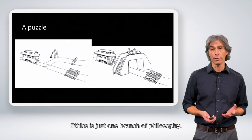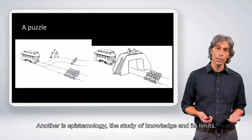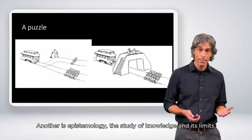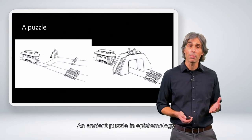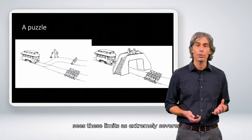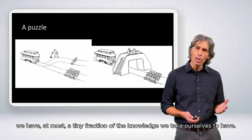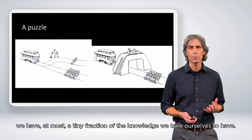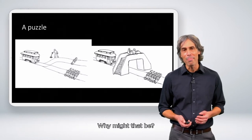Ethics is just one branch of philosophy. Another is epistemology, the study of knowledge and its limits. An ancient puzzle in epistemology sees these limits as extremely severe. We have, at most, a tiny fraction of the knowledge we take ourselves to have. Why might that be?